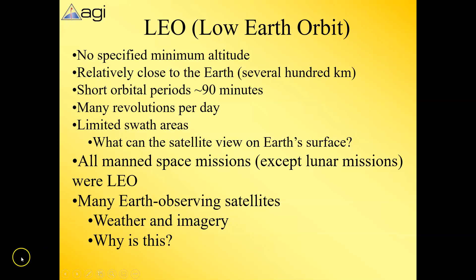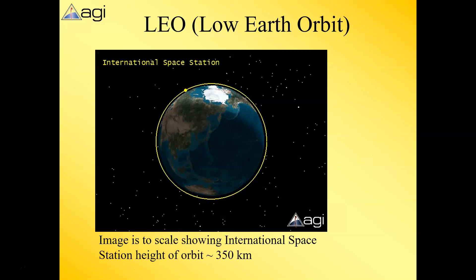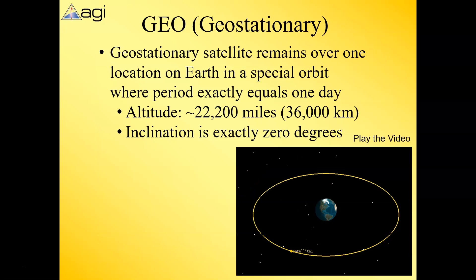Here we see a real picture drawn to scale of the International Space Station. It says an orbit of 350 kilometers, though it generally orbits between 220 to 240 miles. As we draw it to scale, you can see how close the ISS actually is to earth — just how low that orbit really is.